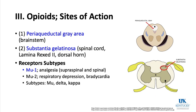Mu2 is associated with respiratory depression and bradycardia. Other opioid receptor subtypes are mu, delta, and kappa. If you could separate mu1 and mu2, that would be a great drug because you'd get analgesia potentially without respiratory depression.